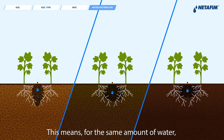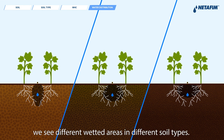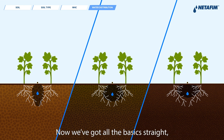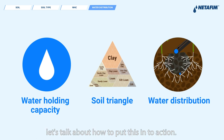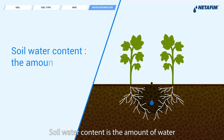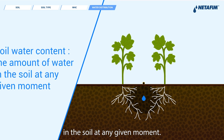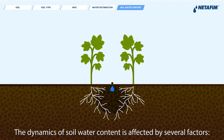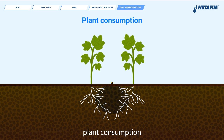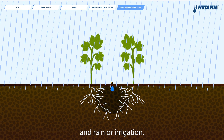For the same amount of water, we see different wetted areas in different soil types. Soil water content is the amount of water in the soil at any given moment. The dynamics of soil water content are affected by several factors: water movement, plant consumption, evaporation, and rain or irrigation.